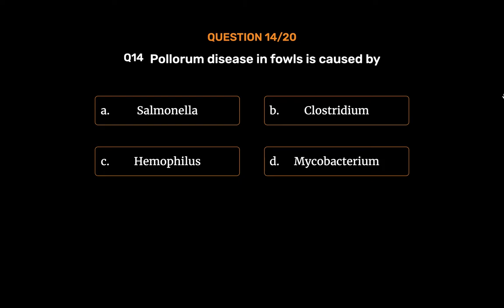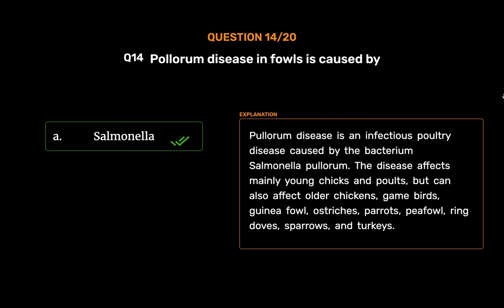The correct answer is Option A: Salmonella. Pullorum disease is an infectious poultry disease caused by the bacterium Salmonella pullorum. The disease affects mainly young chicks and poultry, but can also affect older chickens, game birds, guinea fowl, ostriches, parrots, pea fowl, ring doves, sparrows, and turkeys.